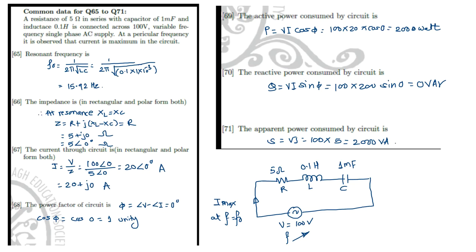In the part 1 video I have uploaded some questions related to the RLC circuit — please watch that video also. A resistance of 5 ohm in series with a capacitance of 1 mF and an inductor of 0.1 henry is connected across a 100 volt variable frequency single-phase AC supply.